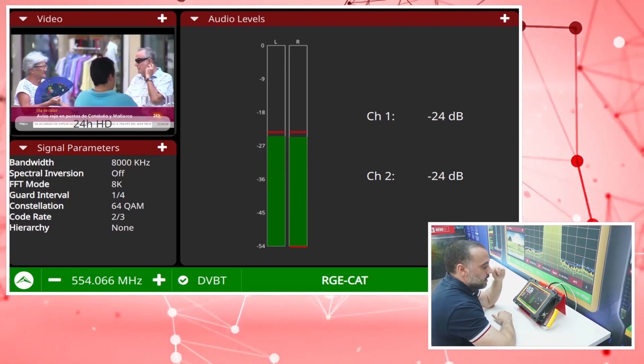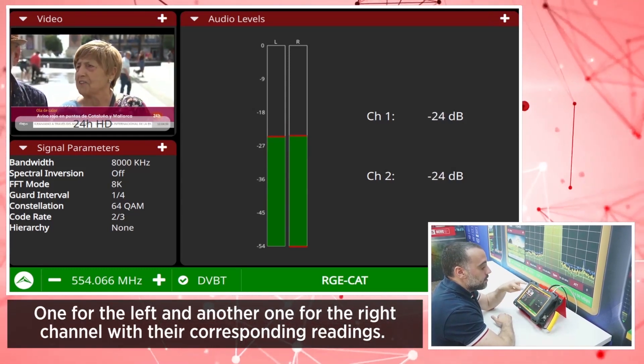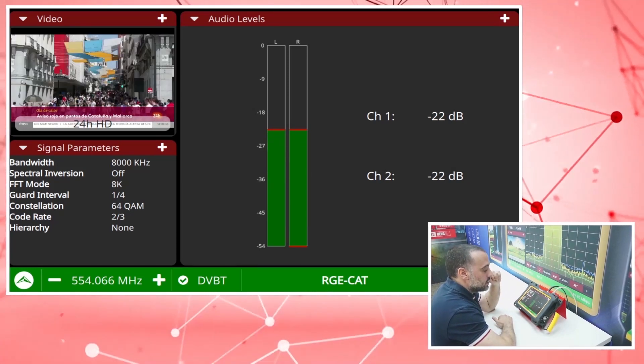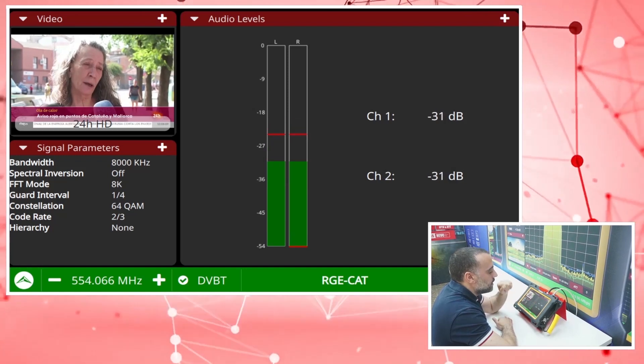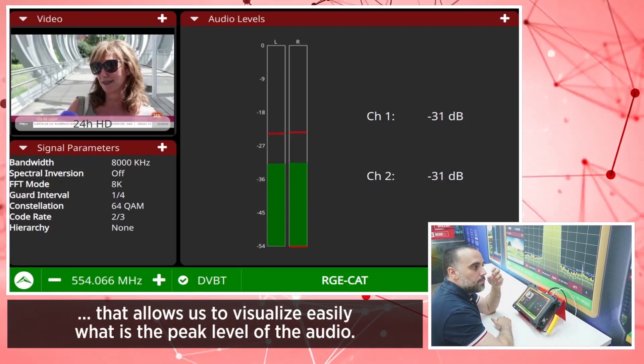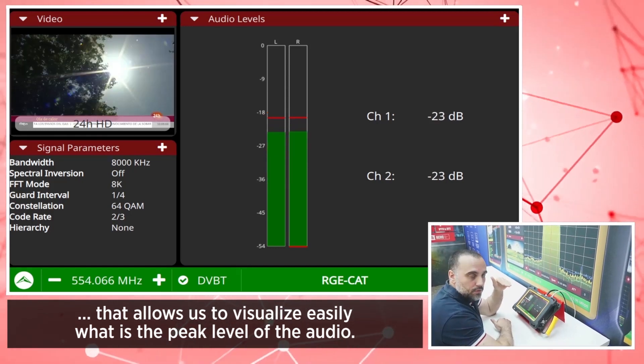These are two loudness bars, one for the left and one for the right channel, with their corresponding readings. There is a red line on top that allows us to easily visualize the peak level of the audio.